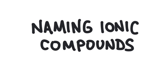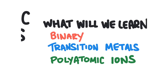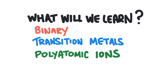In this video we're going to learn how to name ionic compounds, and there are three types we'll cover. The first is simple binary ionic compounds, which have only two elements. The second is binary ionic compounds that include a transition metal. The third is ionic compounds that involve a polyatomic ion. For each type, we'll look at examples going from a formula to a name and then from a name back to a formula.